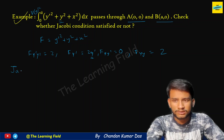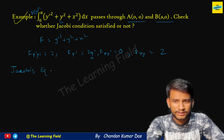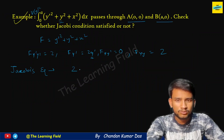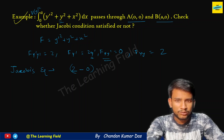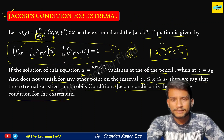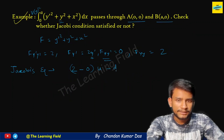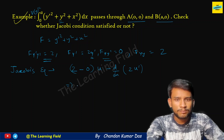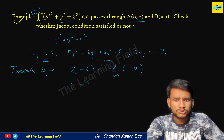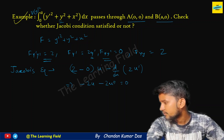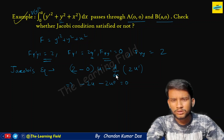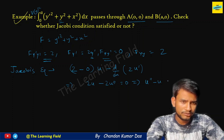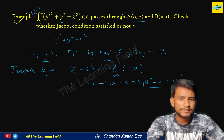Now we put these values into Jacobi's equation: F_yy minus d/dx of F_yy' times u, minus d/dx of F_y'y' times u' equals zero. Substituting: 2 minus d/dx(0)·u minus d/dx(2)·u' = 0, which simplifies to 2u minus 2u'' = 0, giving us u'' minus u = 0.